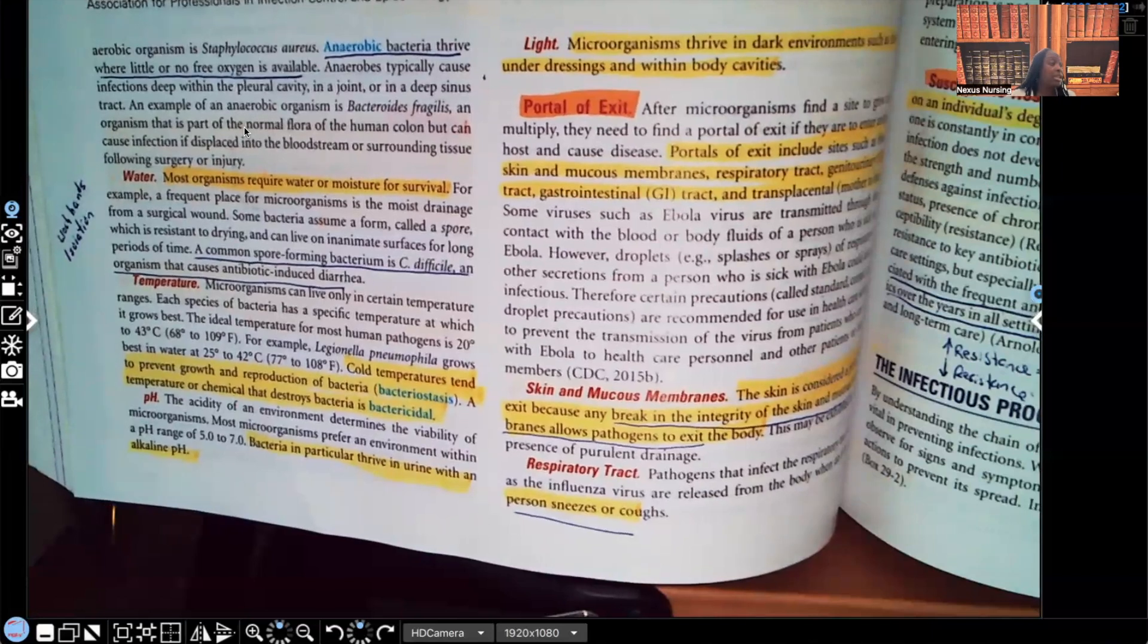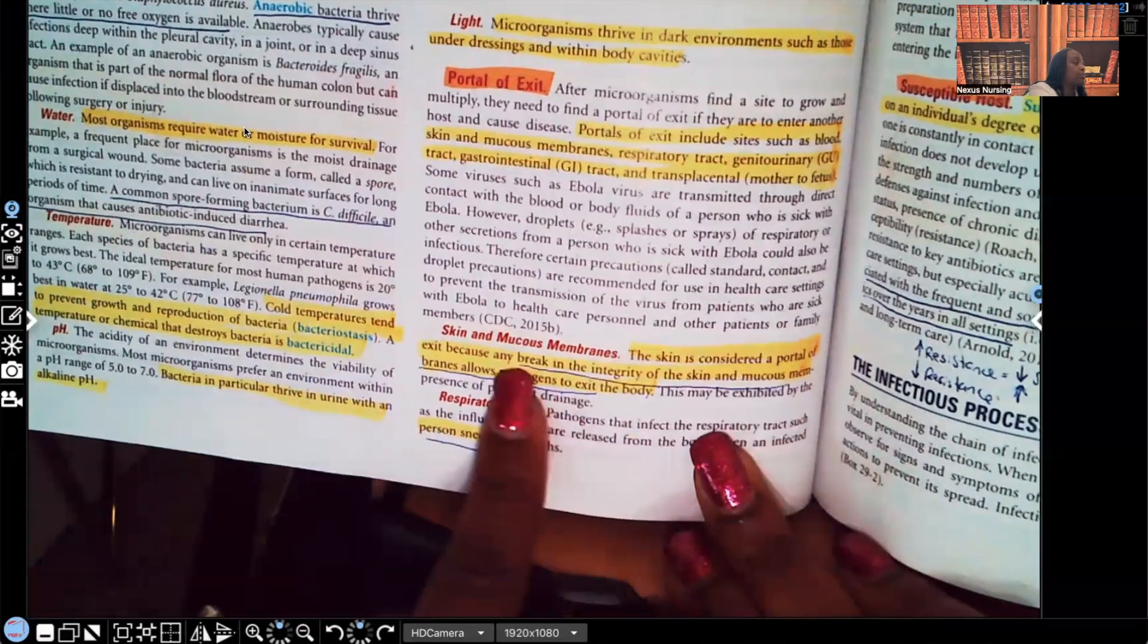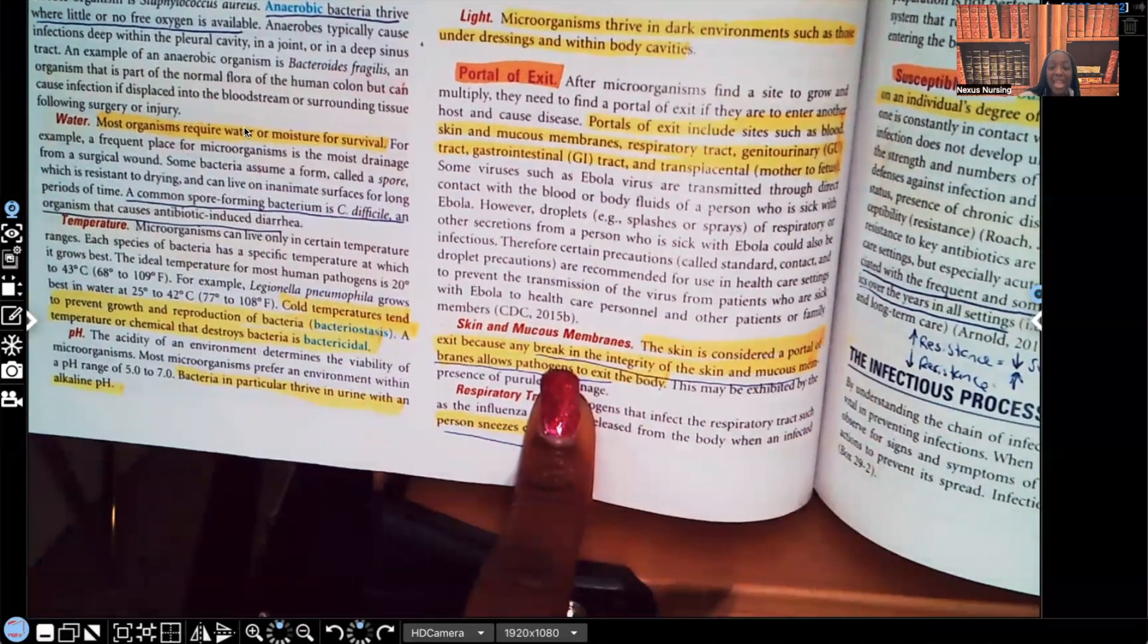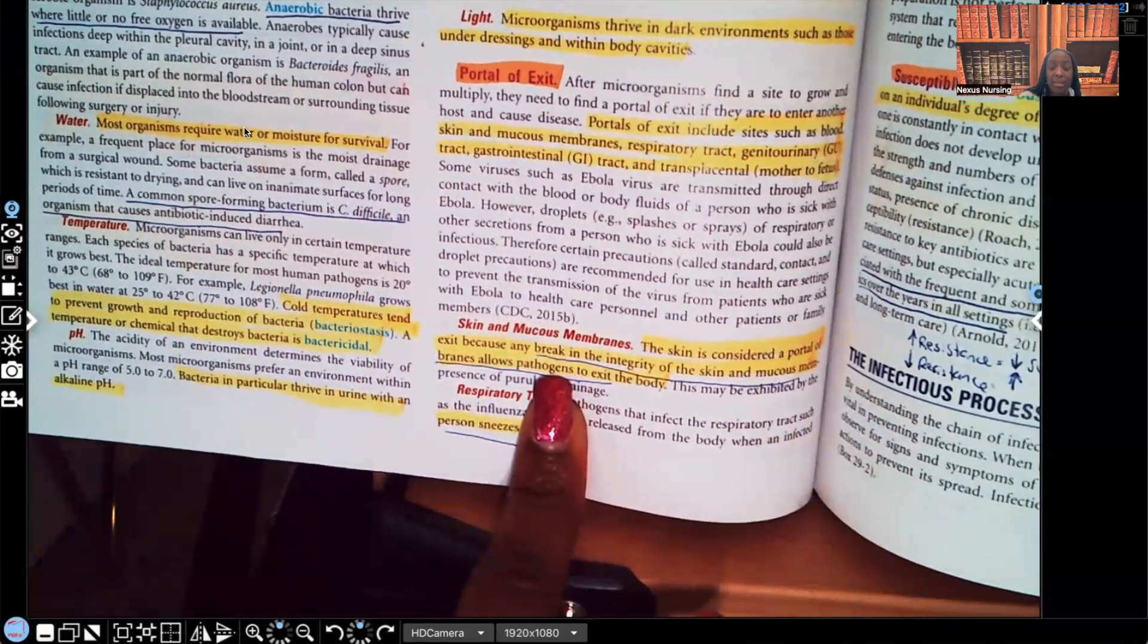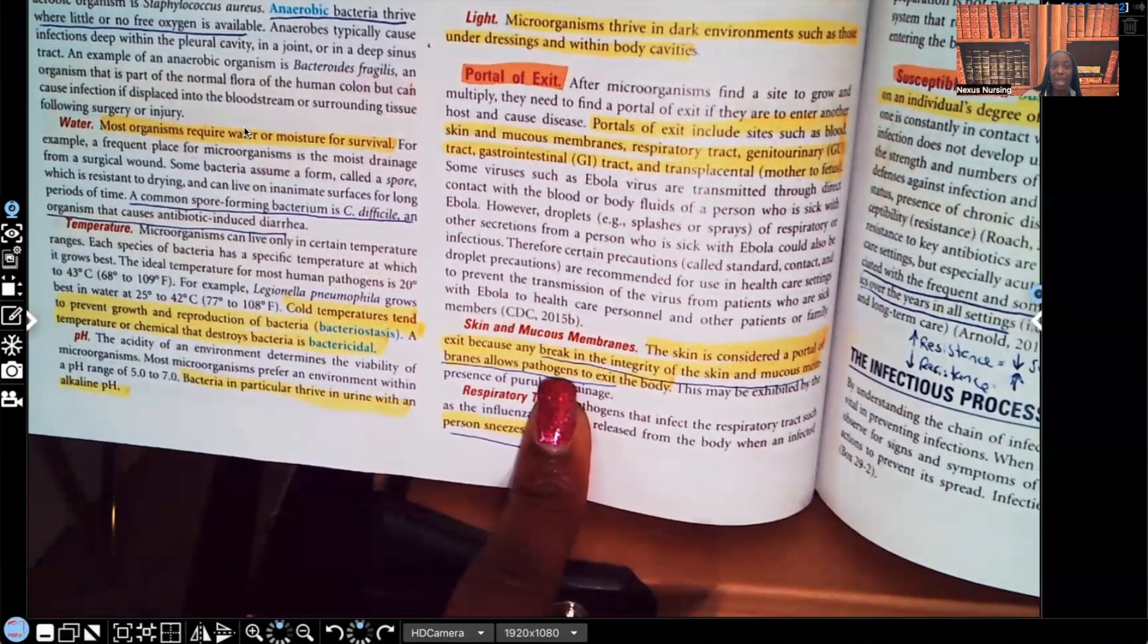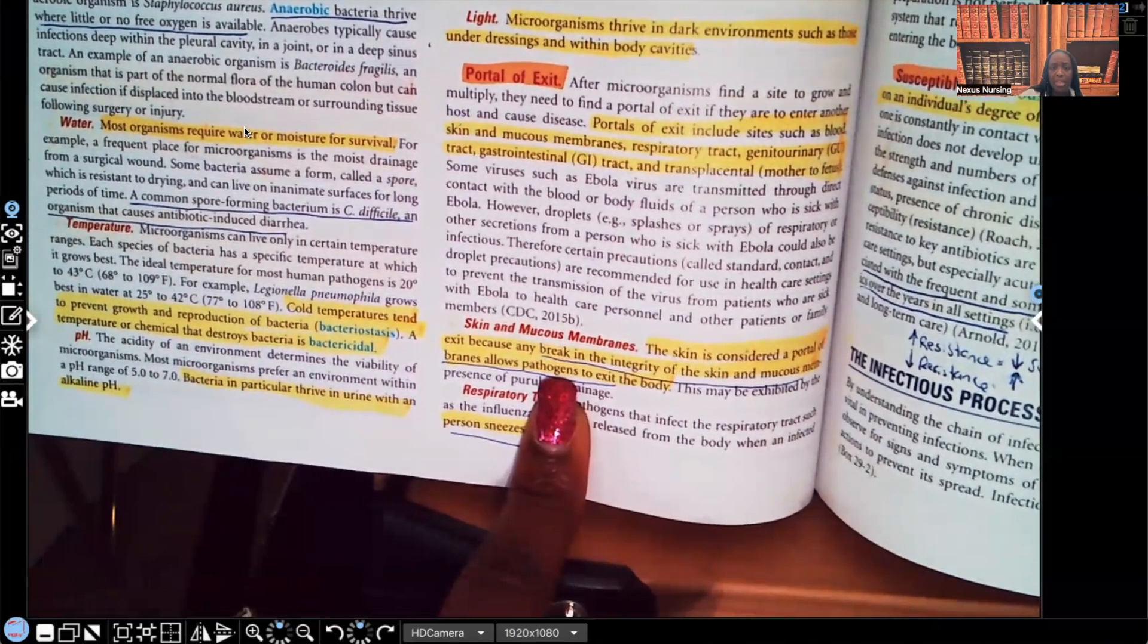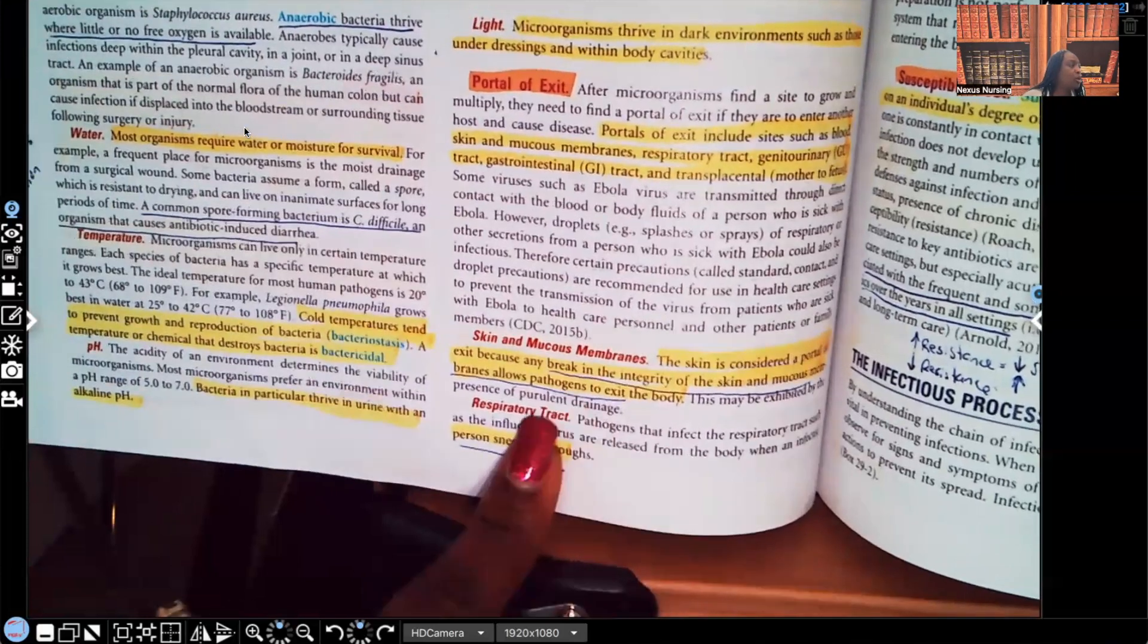Let's start with the skin and mucous membranes. It says the skin is considered a portal of exit because, and I underlined this, look at this, any break in the integrity of skin and mucous membranes allows pathogens to exit the body. Guys, your skin is your first line of defense against pathogens, right? But that skin, there being a break in that integrity is a perfect way for the pathogen to leave as well. Let's keep going.